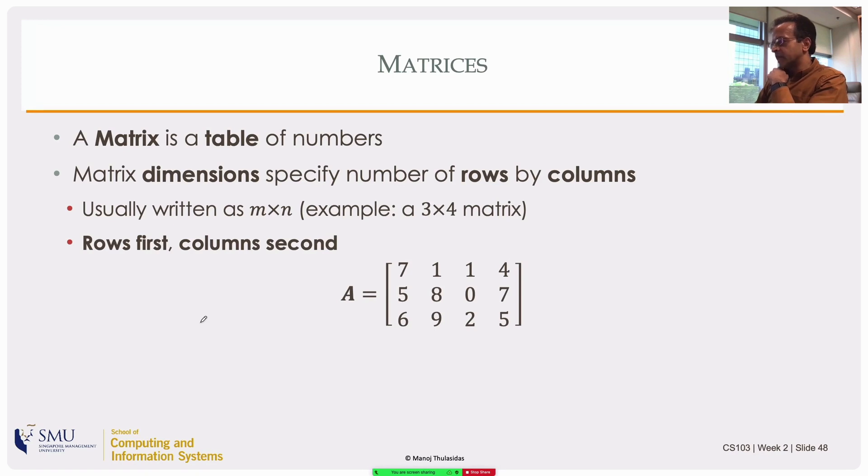So here's an example matrix, just some random numbers but three rows and four columns. So A is a three by four matrix.